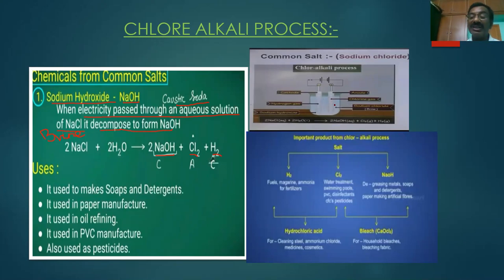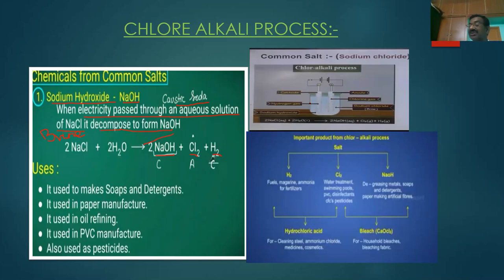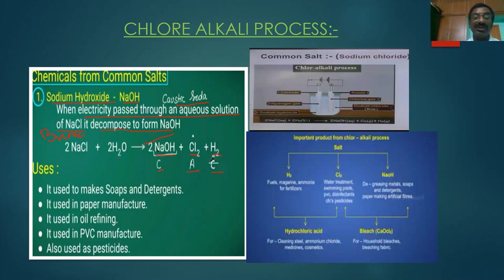A diagram is shown: in a vessel, brine solution is taken and two electrodes are inserted, connected to a battery. When electricity is passed, Sodium Chloride decomposes into Na+ and Cl- ions. By electrolysis, Sodium Hydroxide and Hydrogen (H2) are formed at the cathode, and Chlorine (Cl2) is formed at the anode. Since Sodium Hydroxide is highly soluble in water it is known as alkali, and since chlorine and alkali are formed, this process is known as the chloroalkali process.